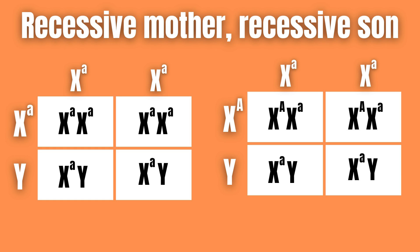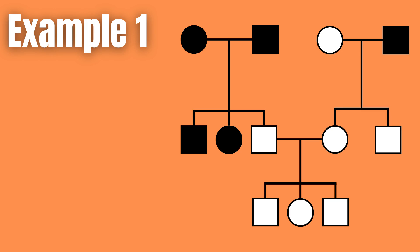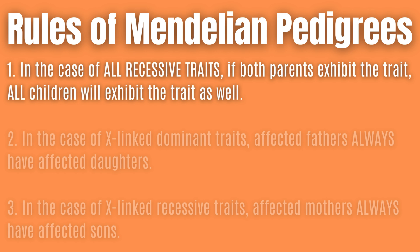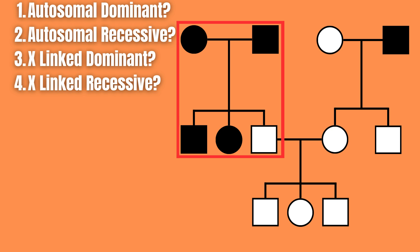Let's use everything we have learned to analyze two examples. In example one, we are trying to determine which pedigree type we are dealing with. We can use one of the rules to eliminate two pedigree types right out of the gate: namely, if this was a recessive trait, all of the children of these two parents would have to exhibit the trait as well.